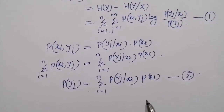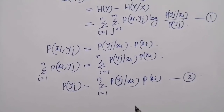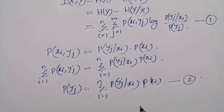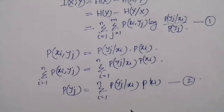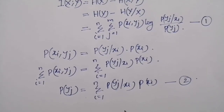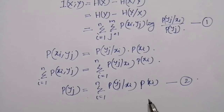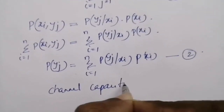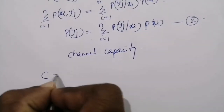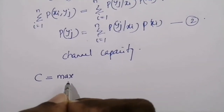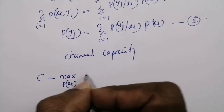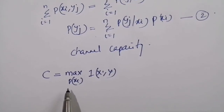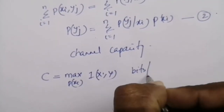Now, what will be the maximum value of mutual information? We may not get any information by observing the channel if the channel is highly noisy in nature. That is, the minimum value of mutual information is 0. We will calculate mutual information for different distributions of input symbol p(xi) and choose the maximum value. The maximum value of mutual information is called channel capacity. Channel capacity is defined as C equal to maximization over all distributions of input symbol p(xi) of I(X;Y), with units of bits per symbol.